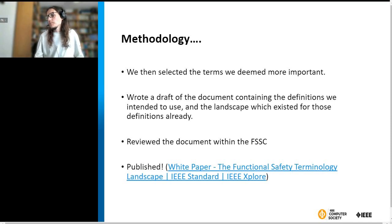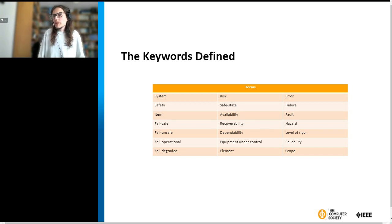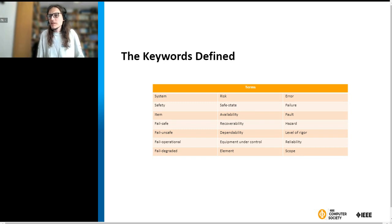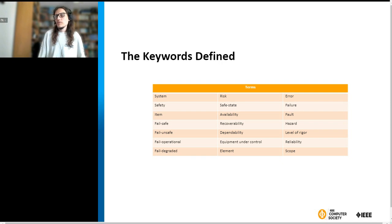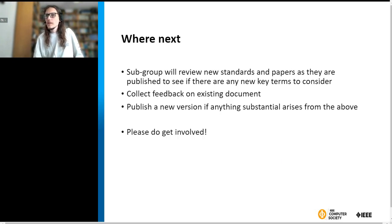Having had all that argument, we selected the terms we thought were the most important and wrote a draft document containing the definitions that we intended to use, also describing the landscape in which those were already used. Where possible, we tried to group definitions into ways they were used and their meanings, doing some contrasting and comparing before arriving at what we considered to be our standard. This was then reviewed within the functional safety standards committee as a whole and published earlier this year — the link is shown on the slide.